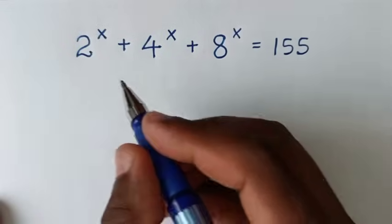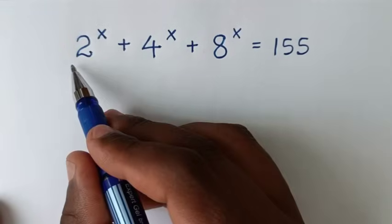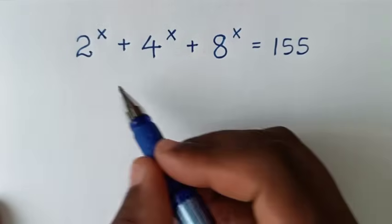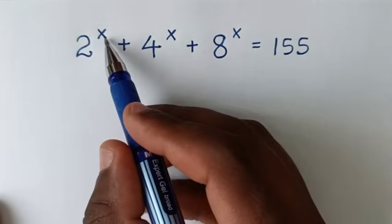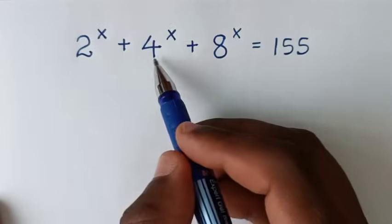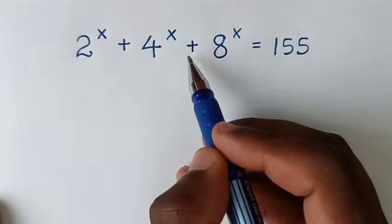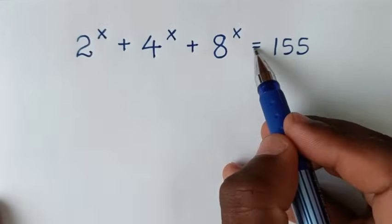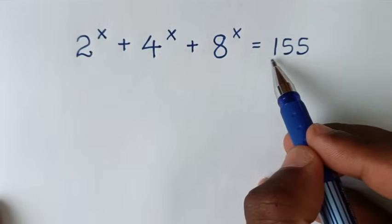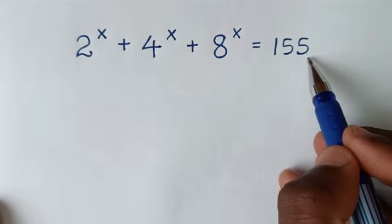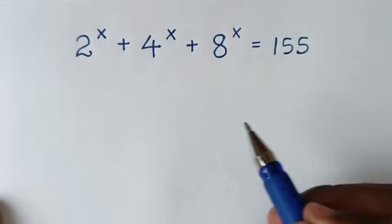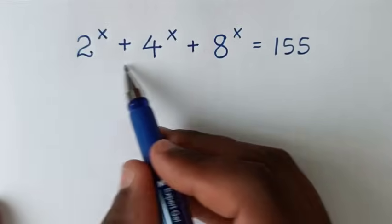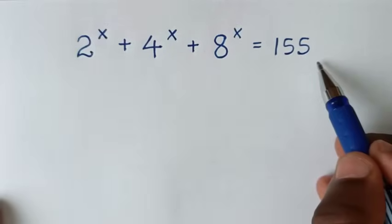Hello, you are welcome to solve this math problem, which is 2 power of x plus 4 power of x plus 8 power of x is equal to 155. To find the value of x from this equation.